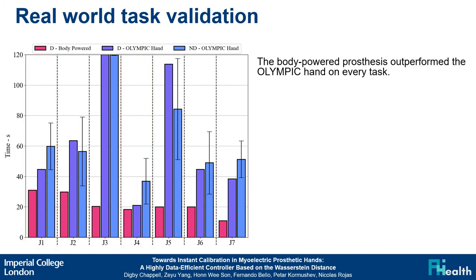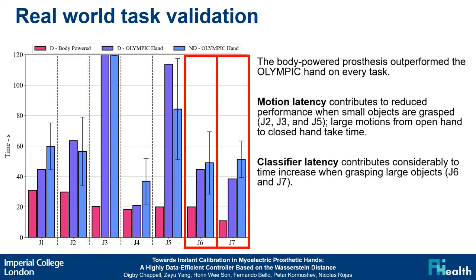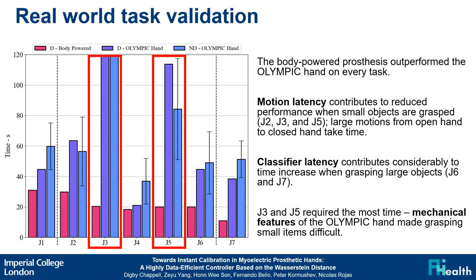In all tasks, the disabled participant using their body-powered prosthesis outperformed all participants using the Olympic hand. In tasks involving small objects such as J2, J3, and J5, the distance that each finger must travel to close the hand is quite large, and therefore motion latency has an impact on performance. In tasks J6 and J7, the objects grasped are large, so the distance each finger must travel is relatively small; in these tasks, classifier latency contributes significantly to the time increase. Finally, the mechanical design of the fingers of the Olympic hand means it may require several attempts before a precision grasp is achieved, which compounds the effects of motion latency and classifier latency, accounting for much of the time difference observed for J3 and J5.